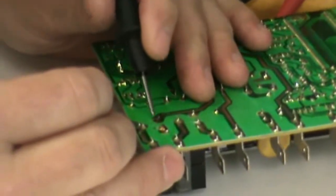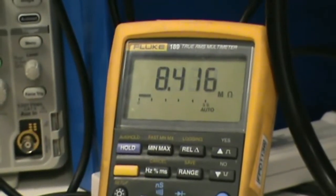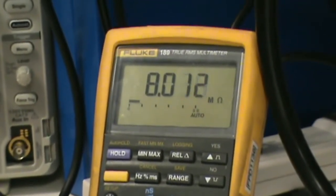Let's check the baked relay. Here's the common to normally closed you see about 10 mega ohms. So obviously the fried relay is fried.